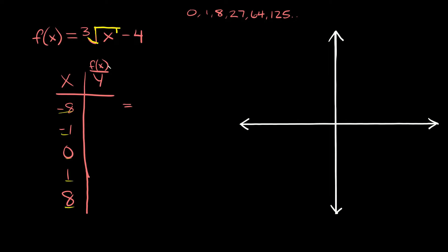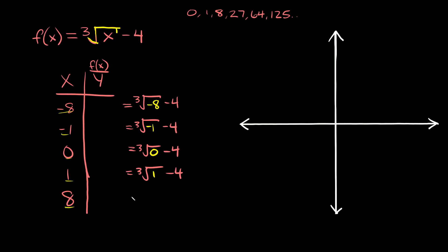So let's plug in these values for x and see what we get for f of x. If we plug in negative 8 we get f of x equals the cube root of negative 8 minus 4. The next one is cube root of negative 1 minus 4. Then cube root of 0 minus 4. Then cube root of positive 1 minus 4. And lastly cube root of positive 8 minus 4. The cube root of negative 8 is negative 2, so negative 2 minus 4 equals negative 6. Cube root of negative 1 is negative 1, so negative 1 minus 4 is negative 5. Cube root of 0 is 0, so 0 minus 4 is negative 4. Cube root of 1 is 1, so 1 minus 4 is negative 3. And cube root of 8 is 2, so 2 minus 4 is negative 2.